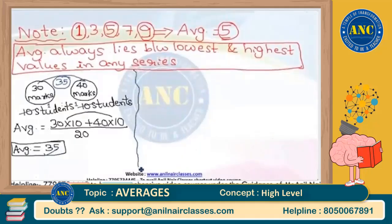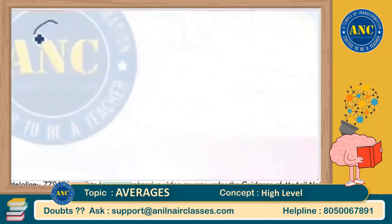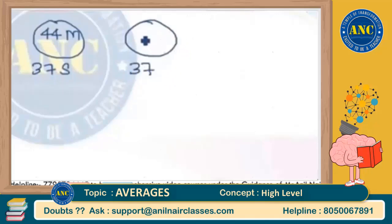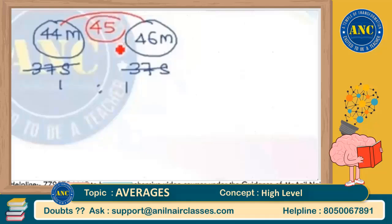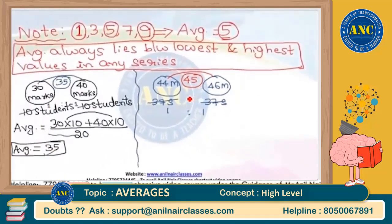One more example: suppose Section A has an average of 44 marks with 37 students, and Section B also has 37 students with an average of 46 marks. Since the number of students is in the ratio 1:1 (equal), I can directly say the combined average is (44 + 46) / 2 = 90 / 2 = 45. The middle value of 44 and 46 is 45.